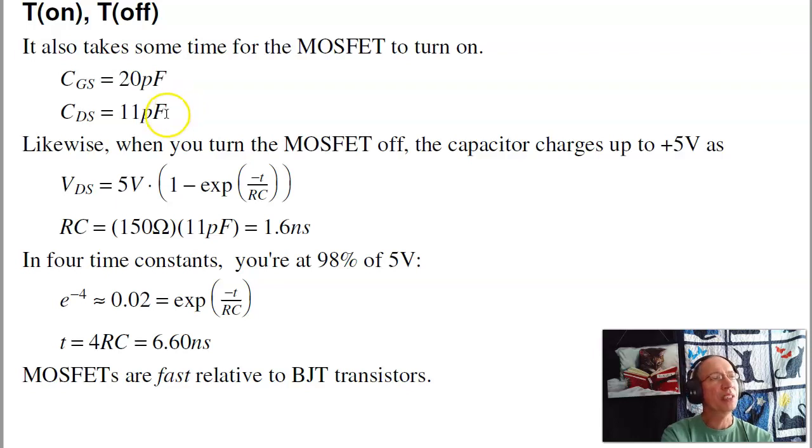What that means is the switching time isn't zero. It takes a little bit of time to charge and discharge a capacitor. For example, if I have 150 ohms and 11 pF, the RC time constant is 1.6 nanoseconds. The multiples rise up exponentially as e to the minus t over RC. If I look at the 2% settling time, 2% is kind of common because the log of 0.02 is minus 4. It's actually minus 3.97, about minus 4. So the settling time is just 4 time constants. If RC is 1.6 nanoseconds, then it'll take about 6.6 nanoseconds to reach steady state.